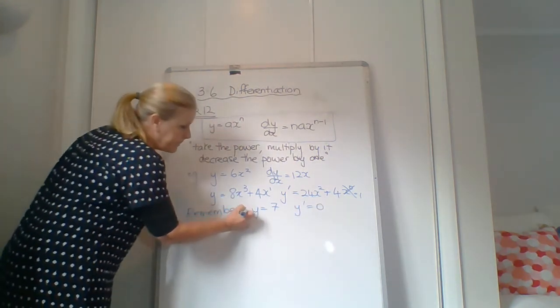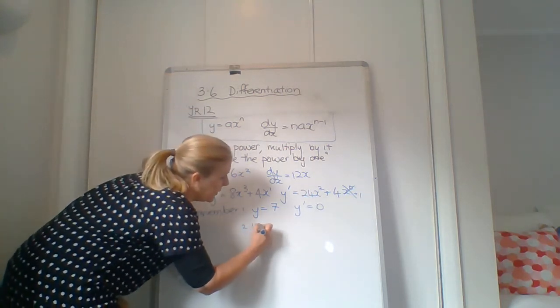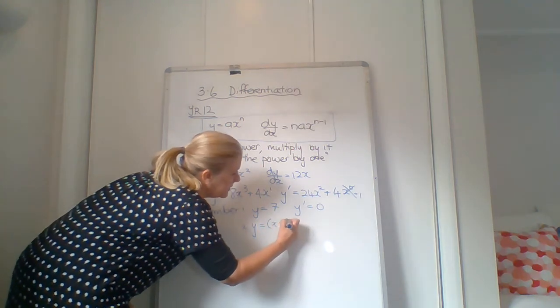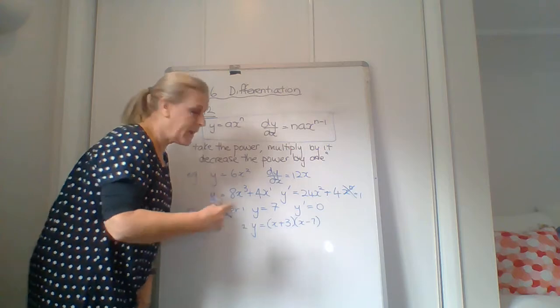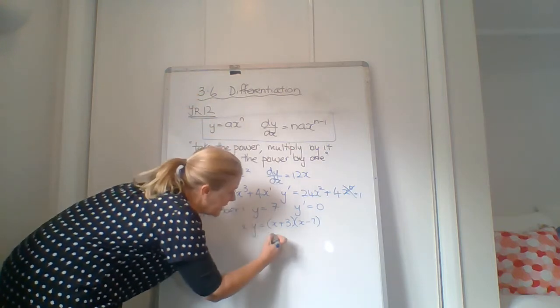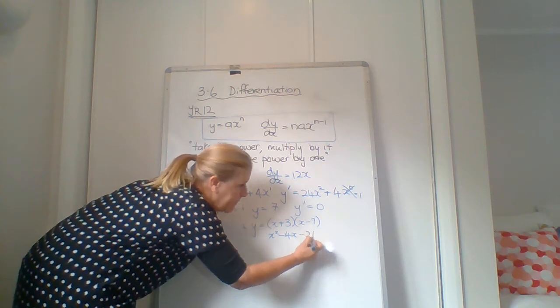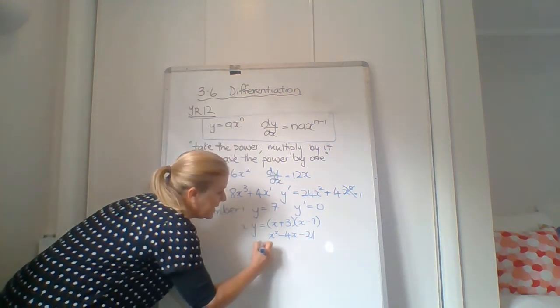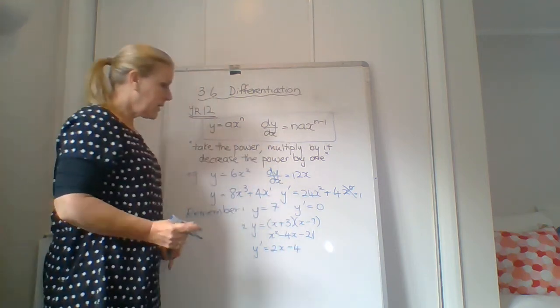And the other one. If we have something that is multiple in brackets, we should multiply it out first. We don't differentiate, so x squared minus 4x minus 21. Then we differentiate. Y dash equals 2x minus 4. Alright.